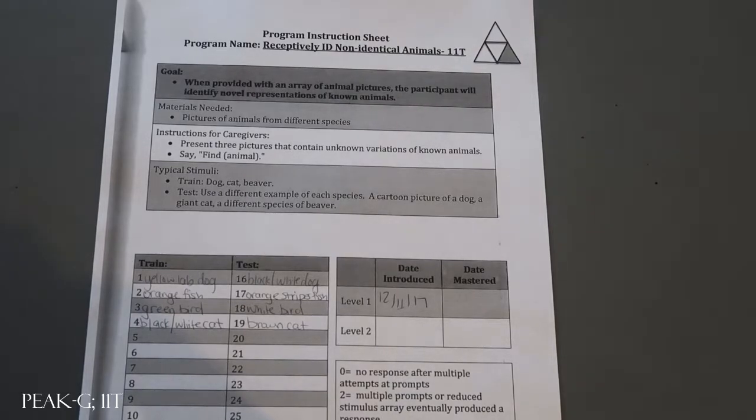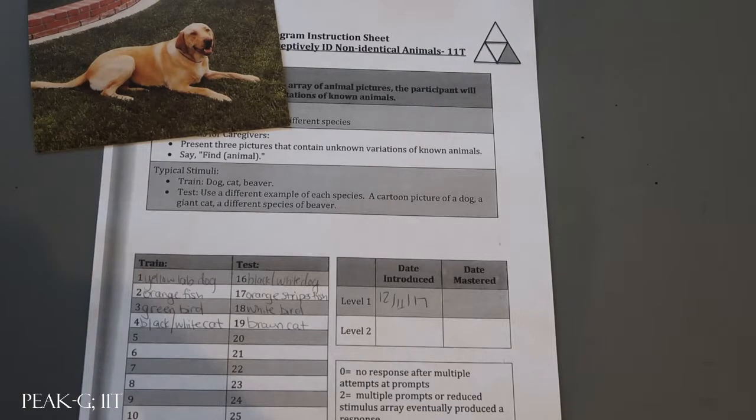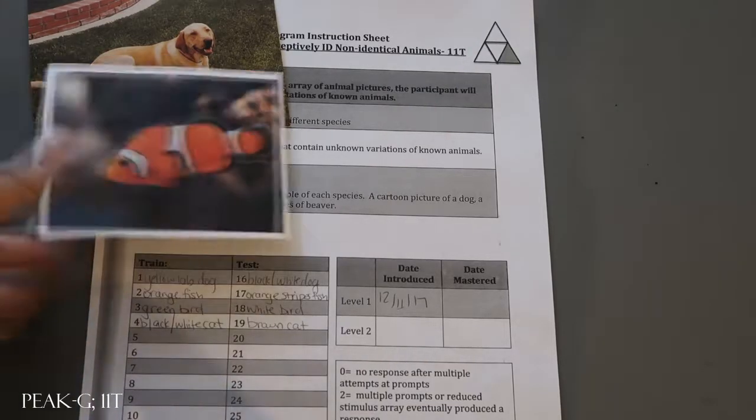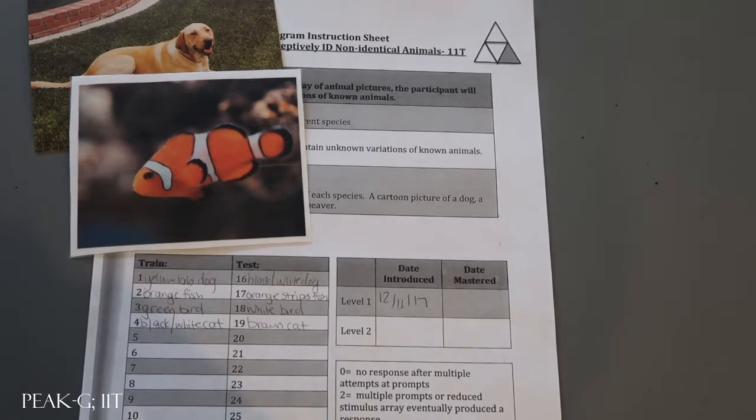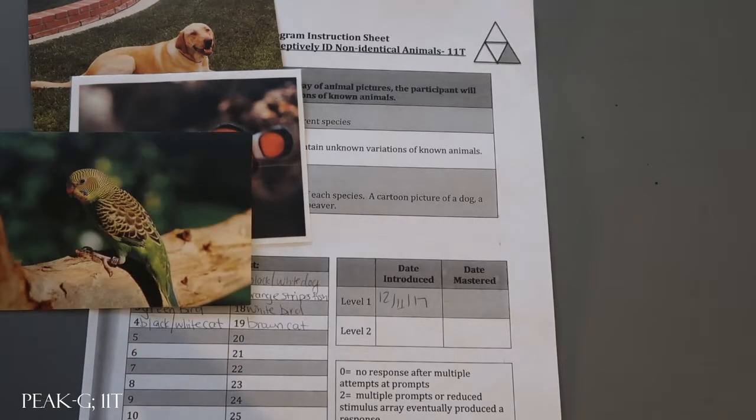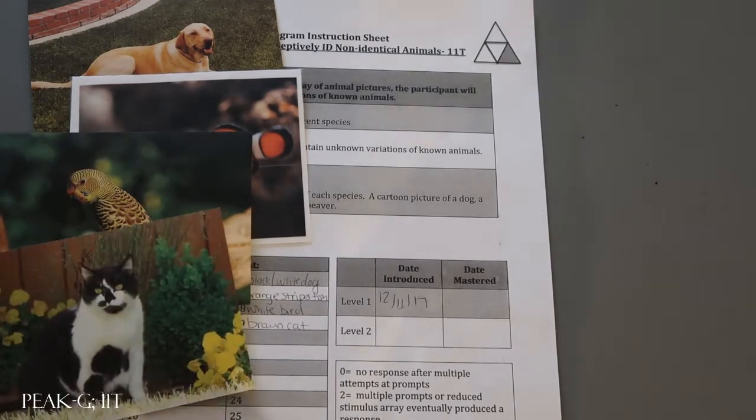So a quick example of this one, we have a yellow lab dog for the first train class, and then we have an orange fish, a bird, and a black and white cat.